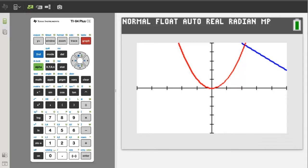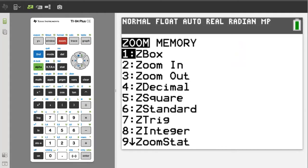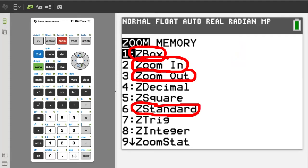To quickly adjust the graphing window, press the zoom button. Then we have these options. The most common ones to use are zoom in, zoom out, Z standard, and Z box.